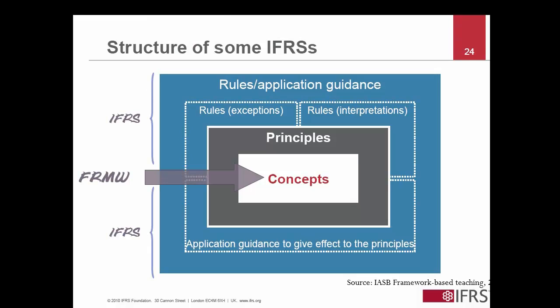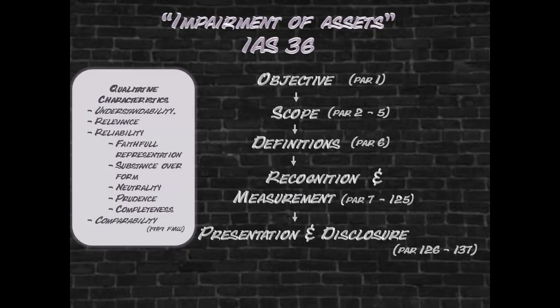As is evident above, where impairments are explained in terms of the asset element's definition, IAS 36 is based on the concepts contained in the conceptual framework. Given that IAS 36 was originally issued in June 1998 and revised in 2003, it may be argued that the concepts contained in the 1989 framework are most applicable.